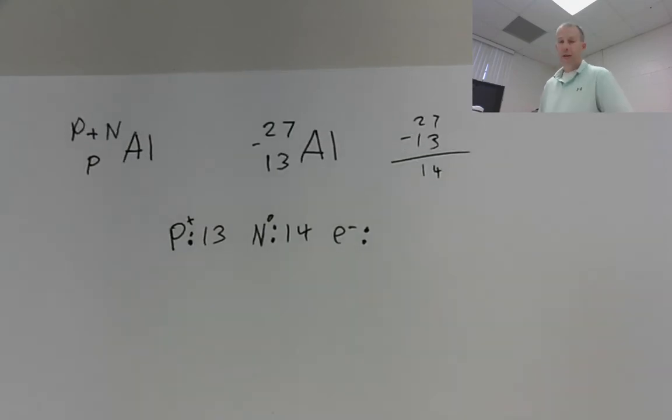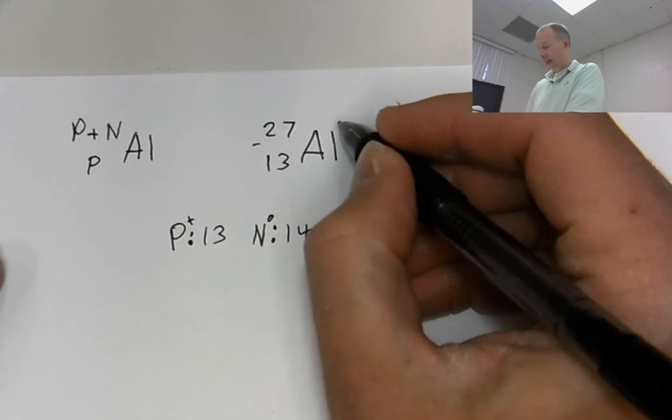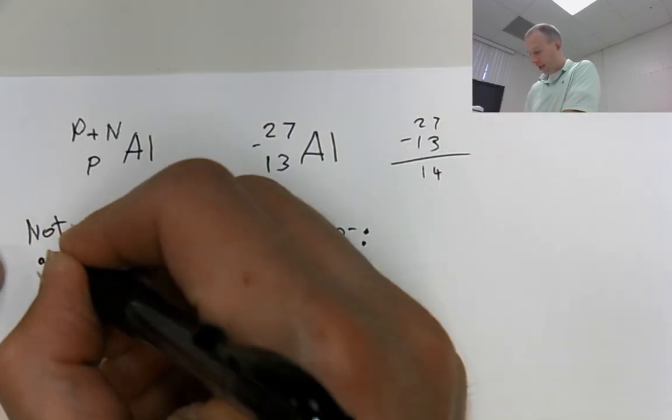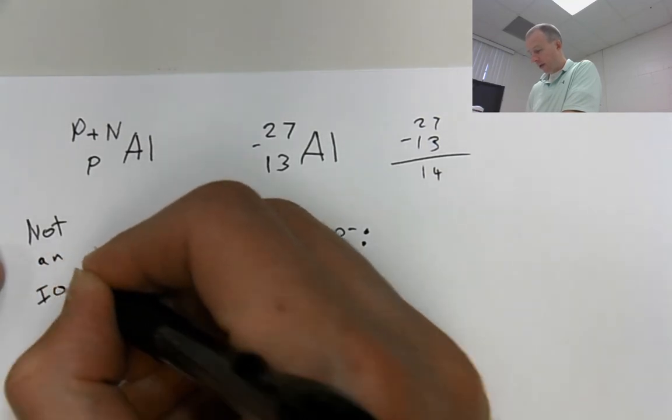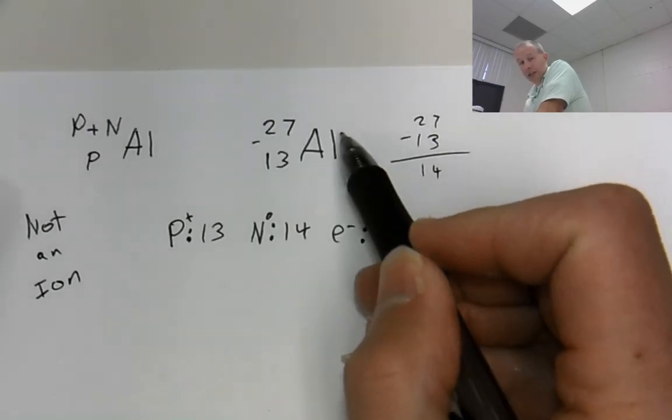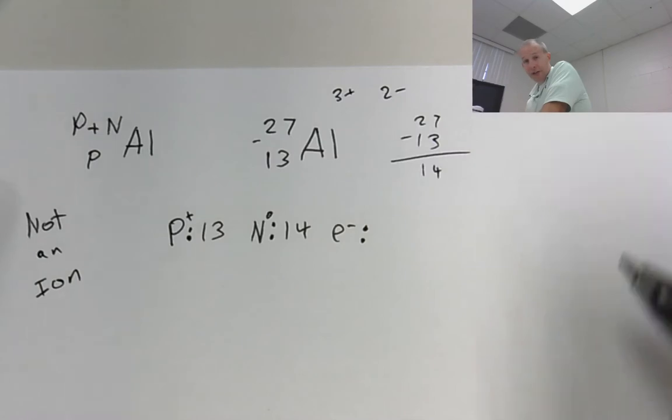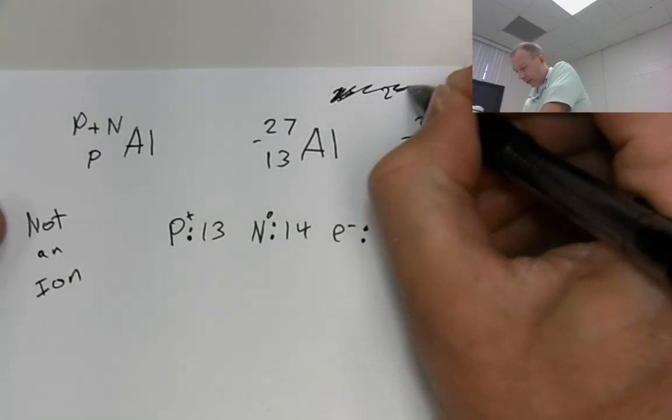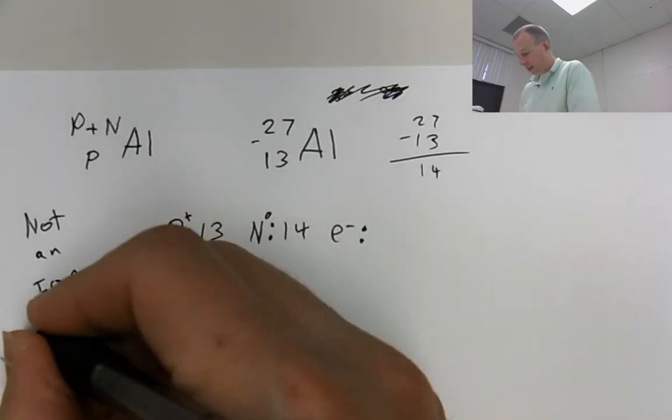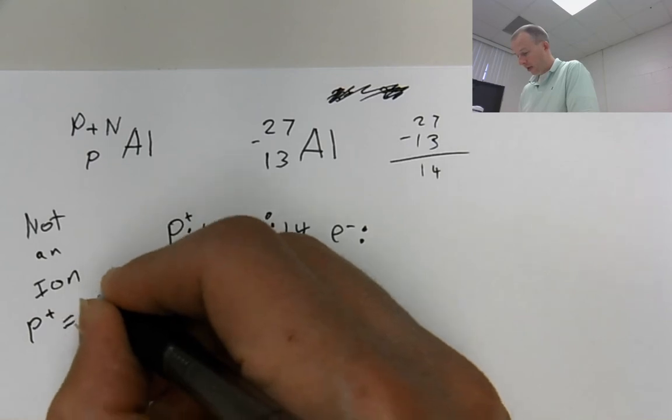Finally, the electrons. Now, in this case, this is not an ion. So this is not an ion. Now, what that means, that means there's no charge written anywhere here indicating, like, there's no, you know, 3 plus or 2 minus or any of that. Like, that's not there. So it's not an ion. So you simply then just say, if it's not an ion, that means the protons are equal to the electrons.